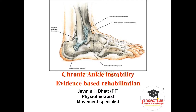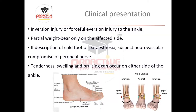This impairment occurs due to decreased strength, decreased range of motion, and altered movement patterns. These are the factors which can lead to chronic ankle instability. Let's look at the clinical presentation for lateral ankle sprain.